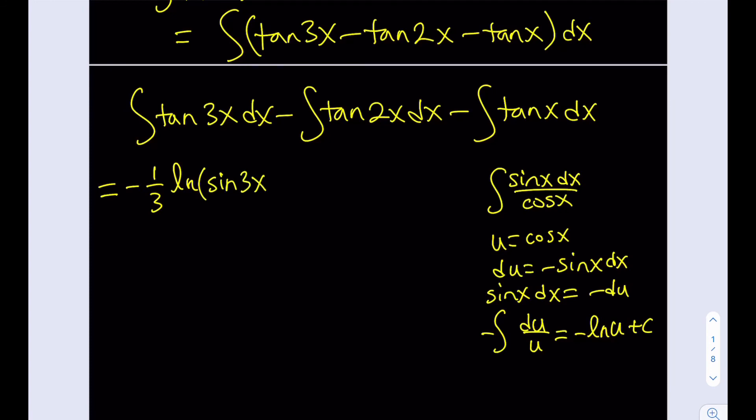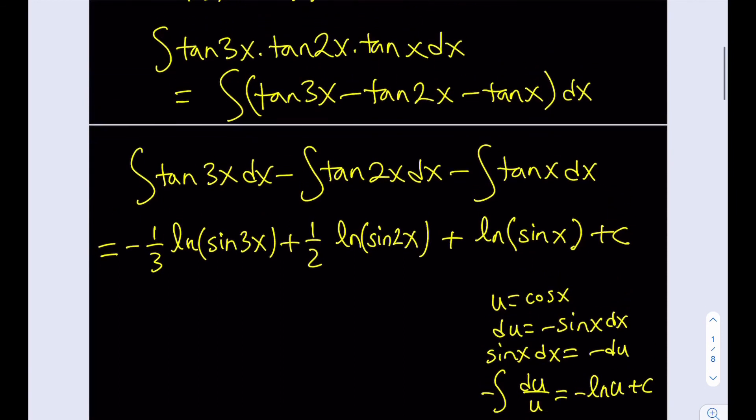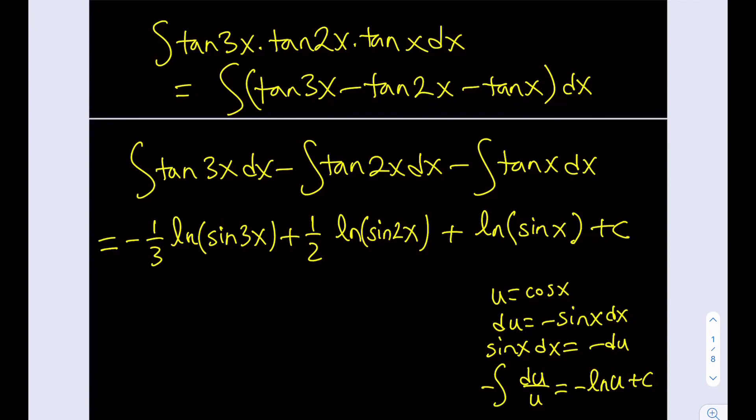So this is going to be negative 1 third of ln of sine 3x. And then, now this is a negative, so it's going to turn into a positive term with 1 half of ln sine 2x. And I'm going to have to make some room here for my answer. And then it's going to be a plus again because that's a negative, and there's no coefficient here to take care of. So that's just going to be ln of sine x. And don't forget the c at the end. So that's going to be the integral that we're looking for. This is going to be equivalent to the integral of tangent 3x times tangent 2x times tangent x. So this is the result.